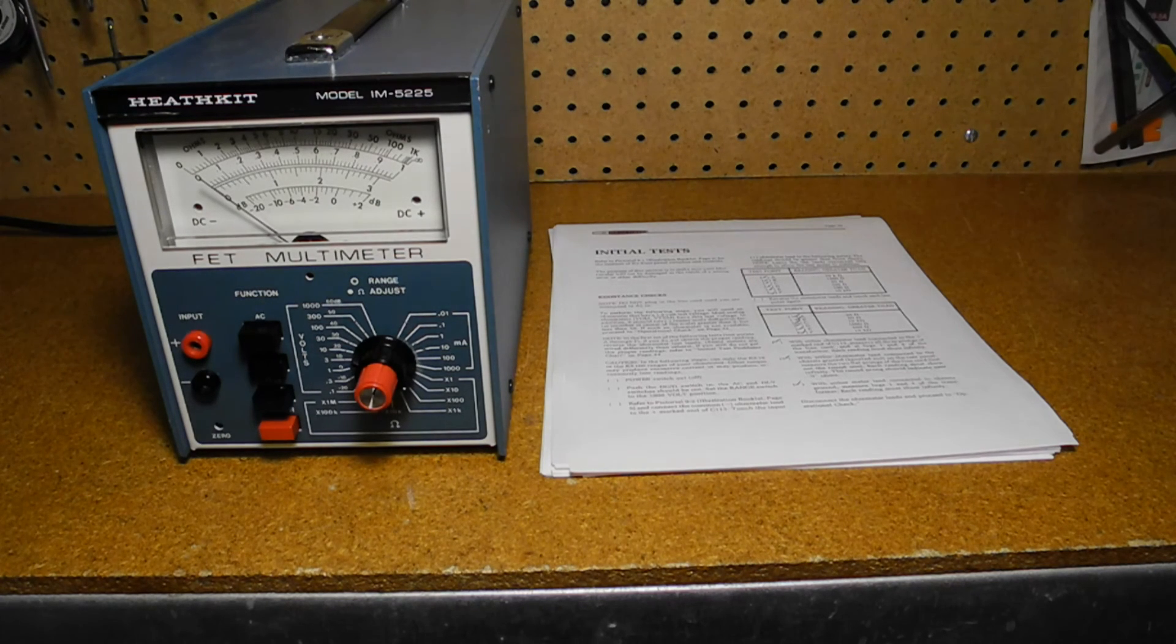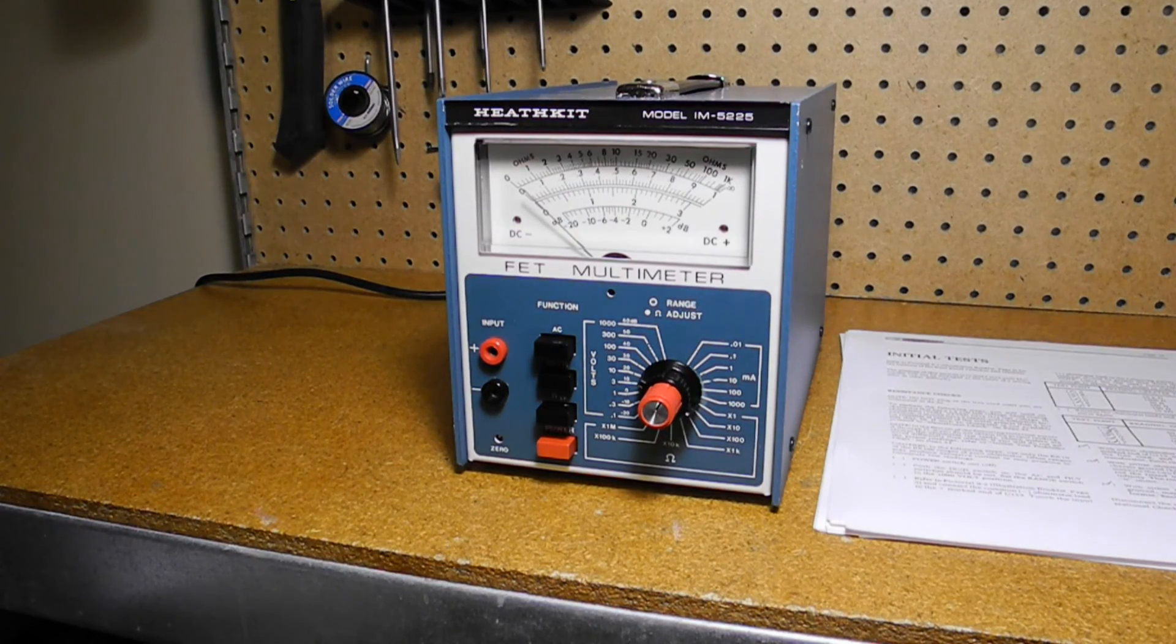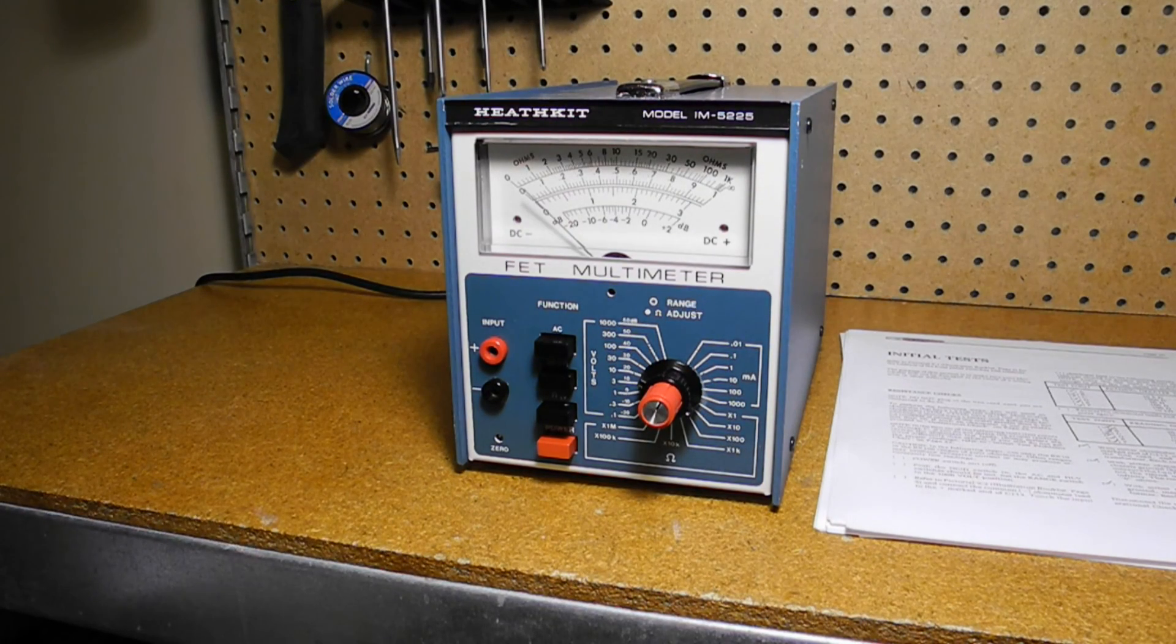Unfortunately, the meter movement is one of the unique parts in this unit and almost impossible to replace. I found several 200 microamp meters on eBay, but it would be hard to find one that's a reasonably close fit to the size. It would need to fit the case, accommodate the polarity LEDs, and fit the existing meter scale or I would have to reproduce a new one. I think my best option is to keep looking for a meter unit that's being sold for parts or just the Heathkit meter movement to show up on eBay.